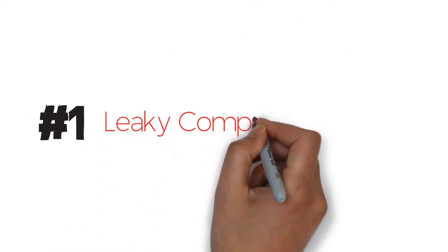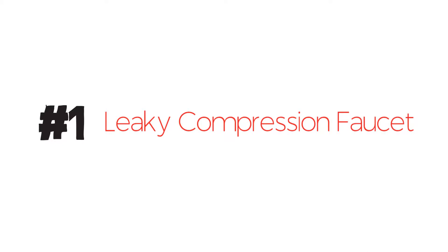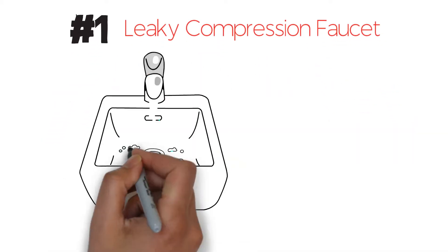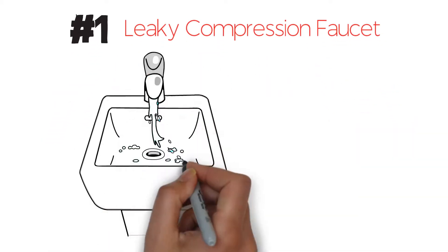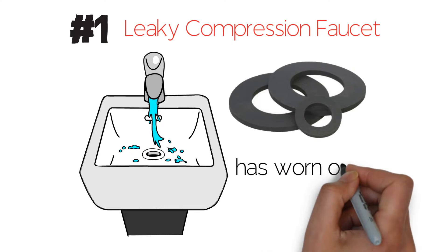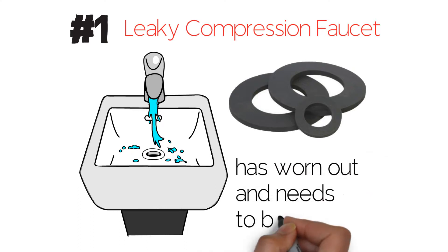1. Leaky Compression Faucet. If a compression faucet is leaking, it means that the rubber washer and/or o-ring has worn out and needs to be replaced.